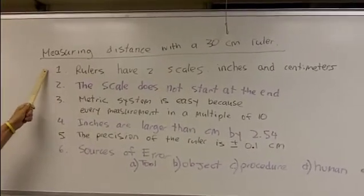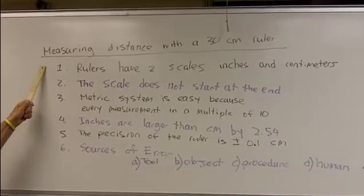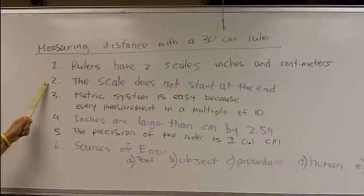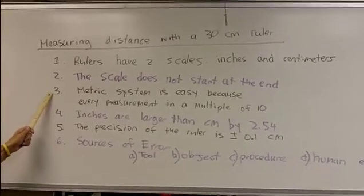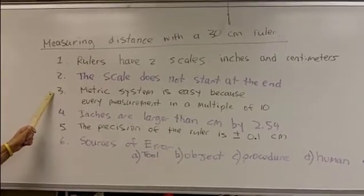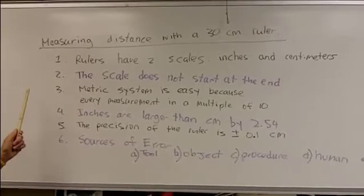Number one, rulers have two scales, inches and centimeters. Number two, the scale does not start at the end. Number three, metric system is easy because every measurement is a multiple of 10.